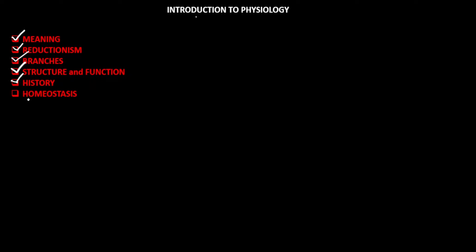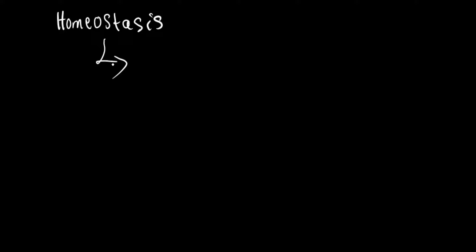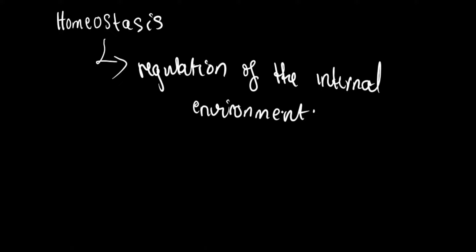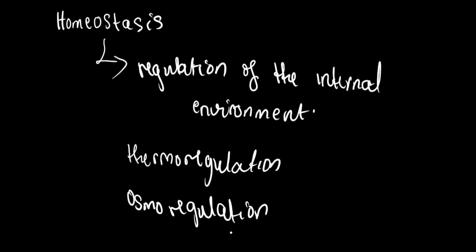Now let's take a very brief look at homeostasis. Homeostasis involves all the processes by which an organism regulates its internal environment — simply, the regulation of the internal environment of an organism. Homeostasis could be in the form of thermoregulation, osmoregulation, and so on. For this video, we'll consider homeostasis through some of the works of Claude Bernard.